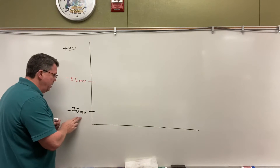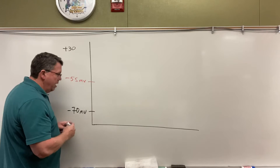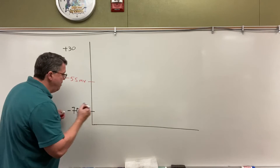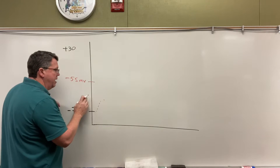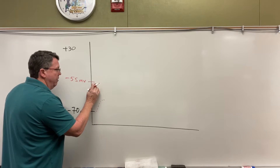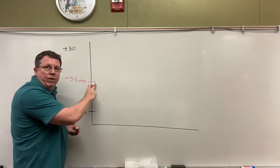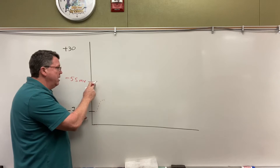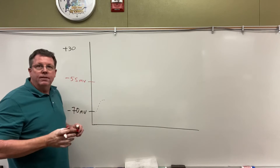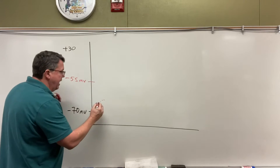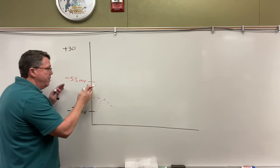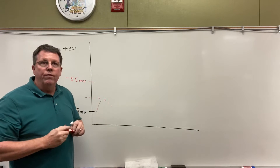Here's our resting potential. We have the sodium gates opening and closing for the most part, and we may get little potentials that will come up a little bit, but it won't be enough to get to the threshold. This right here is called the threshold. I need to go from negative 70 to negative 55 in order for my action potential to take place. If we have little stimuli that's not enough to get all the way up there, then the action potential will not occur.